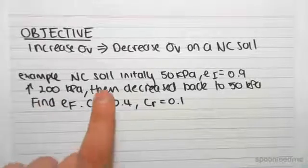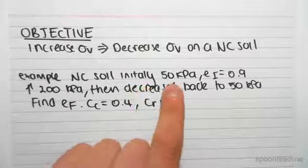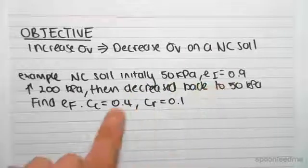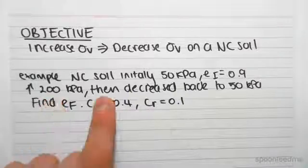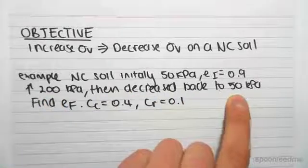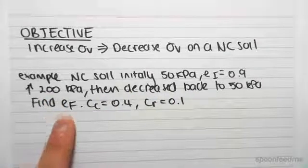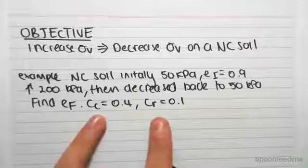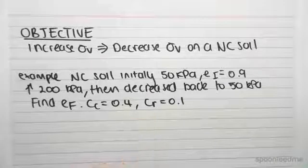The example we've got is a normally consolidated sample initially at 50 kPa with a voids ratio of 0.9. We increase it to 200 kPa and then decrease it back to 50 kPa. We want to find the final voids ratio given the compression index Cc and recompression index Cr.